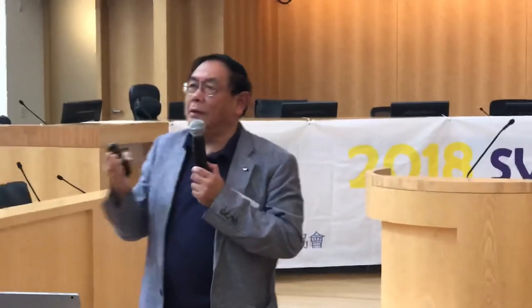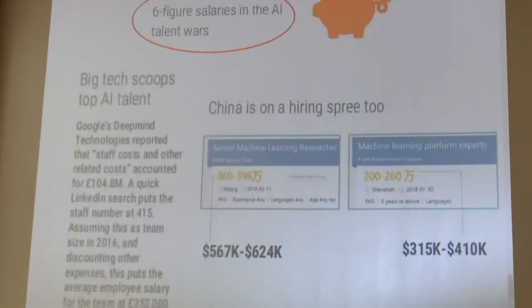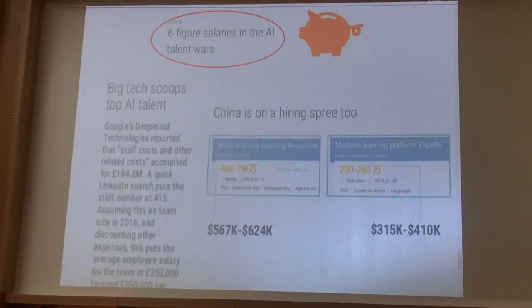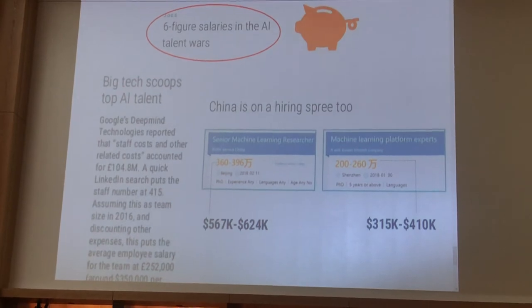A radio station locally interviewed me about a month ago asking why this talent shortage is happening. It's very simple: it takes about four years to graduate a PhD student in AI, yet everybody needs at least one AI expert per company — so the demand is very large. That's why salaries are really high: companies are trying to lure people from academia and universities into industry. We've heard about Alibaba and all these major companies — everybody is trying to hire AI experts.